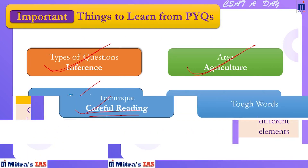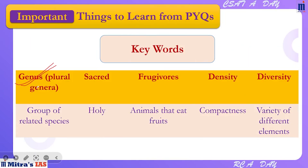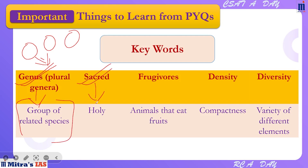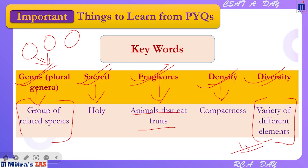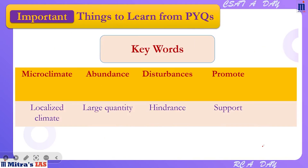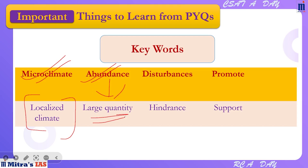Let's look at the key words from the passage. Genus: a group — different groups mein divided hoti hain trees, fig tree jiske andar aata hai usko genus Ficus kehte hain. Sacred: holy or worship-related. Frugivores: animals that eat fruits — jaise carnivores, herbivores hote hain, waise frugivores. Density: compactness. Diversity: variety of different elements. Microclimate: localized climate. Abundance: large quantity — zyada quantity mein available hona. Disturbance: hindrance, rukawat. Promote: support karna.